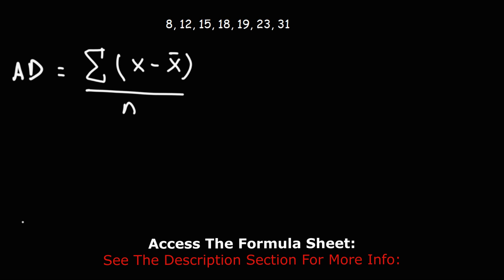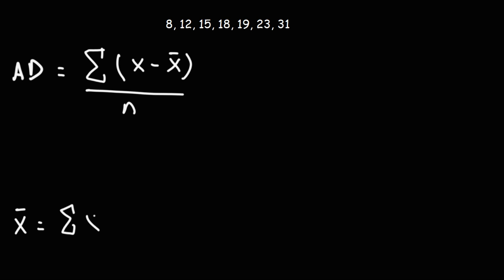So first, we need to calculate the mean. The mean is the sum of all of the x values over n. So we have 8 plus 12 plus 15 plus 18 plus 19 plus 23 plus 31, and we're going to divide all of this by 7. n is 7 since we have 7 numbers.